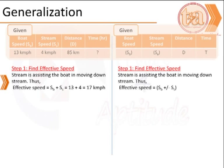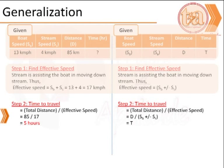The first step is to find the effective speed. Note here that the stream is assisting the motion of the boat and therefore we have a positive sign. In case the motion of the boat is hampered by the stream's speed, then it will be a negative sign. We could choose the effective speed as either Sb plus or minus Ss. The last step is pretty simple. We know that the total distance by the effective speed gives us the time for travel, and we just use the formula D divided by the effective speed to find the variable T.